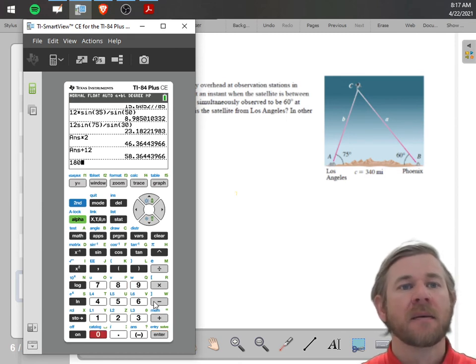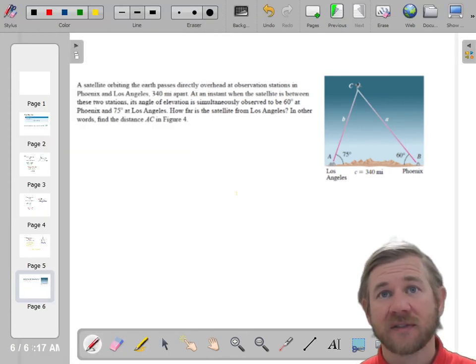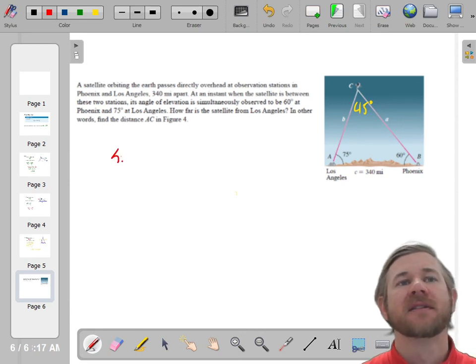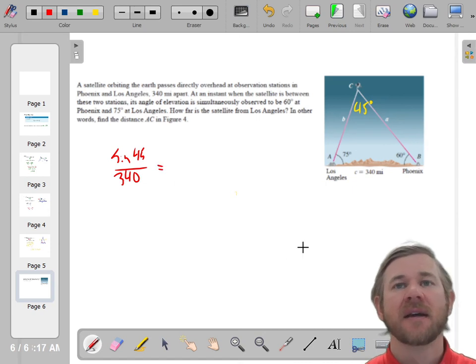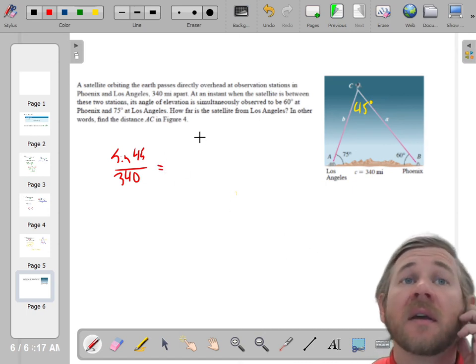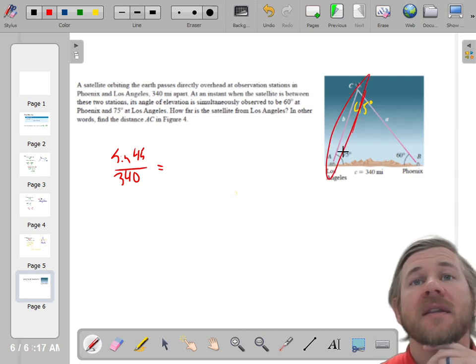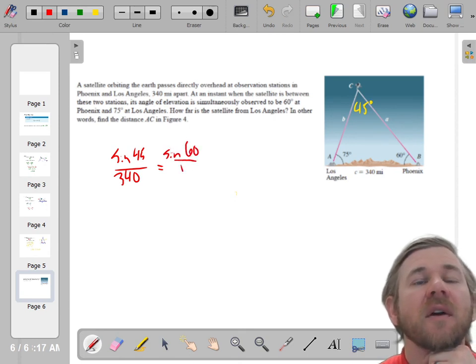So I'll do 180 minus 75 minus 60. And I get 45. That means that this is 45 degrees. So I have an angle side pair. I'll say the sine of 45 over 340 miles. We're talking about satellites. And what are we trying to find? How far is a satellite from LA? So that's this one LA. So we're trying to find B. So it's the sine of 60 over little B.